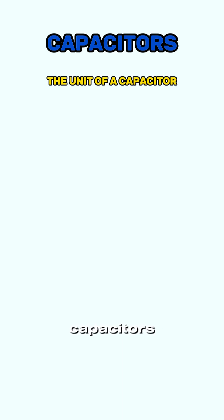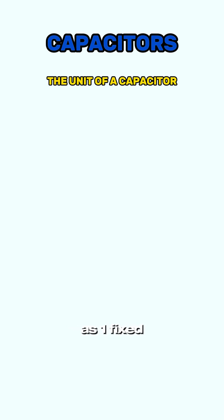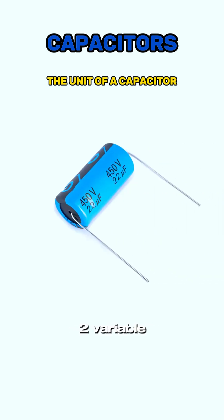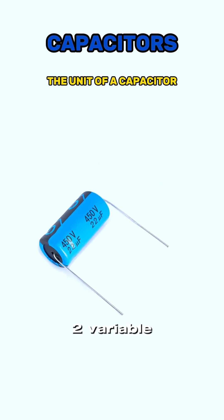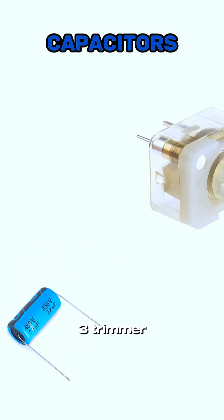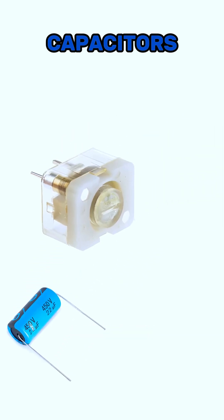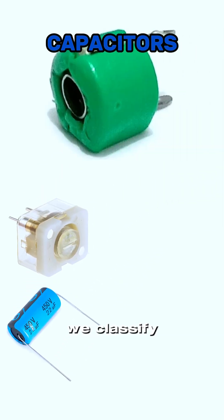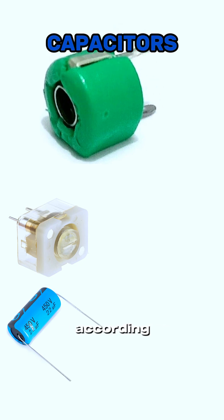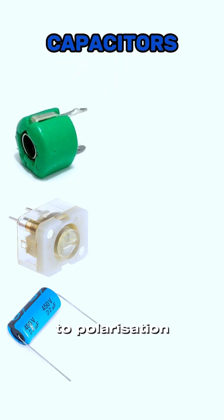But how are capacitors classified? We classify capacitors as: 1. Fixed capacitors, 2. Variable capacitors, and 3. Trimmer capacitors. We also classify capacitors into two types according to polarization.